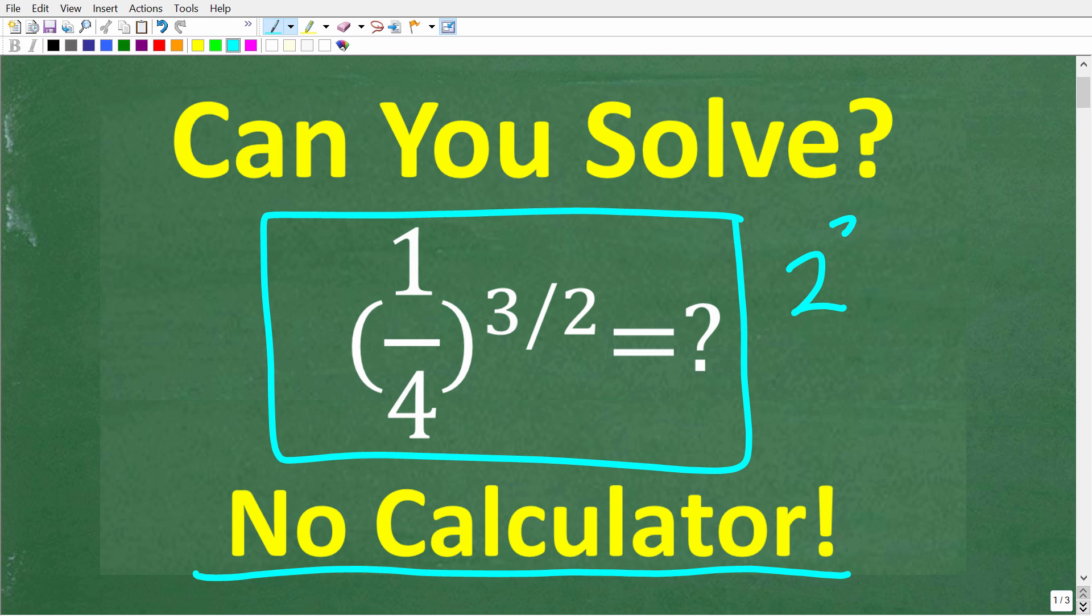So if I have like 2 to the 3rd power, this little 3 up here is called an exponent. This 2 down here is called the base. The entire thing is a power. So 2 to the 3rd power means take 2 and multiply it by itself 3 times. So of course the answer here is 8.